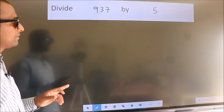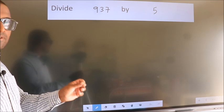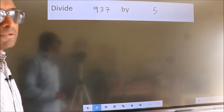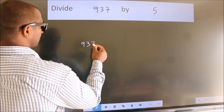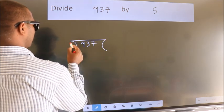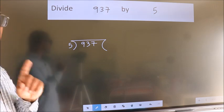Divide 937 by 5. To do this division, we should frame it in this way: 937 here, 5 here. This is your step 1.